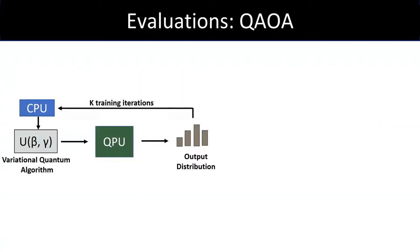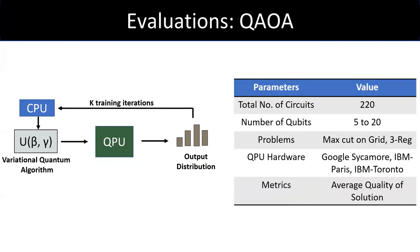In the near term, we want to run variational quantum algorithms such as QAOA to solve optimization problems. Where we train the quantum circuit using classical optimizer running on the CPU to find circuit parameters, beta and gamma, that maximizes the quality of solution. In our paper, we evaluate effectiveness of HAMMER using QAOA circuit benchmarks running on IBM quantum computers. Moreover, we use Google's publicly available dataset to evaluate performance of HAMMER.